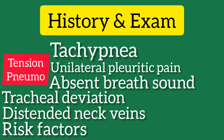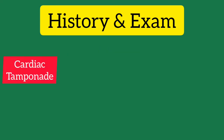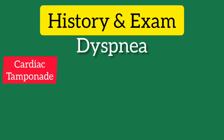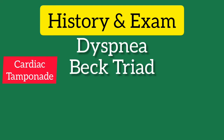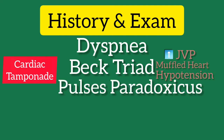Diagnostic clues to pericardial tamponade as the etiology of undifferentiated shock include dyspnea, Beck's triad (i.e., elevated jugular venous pressure, muffled heart sounds, hypotension), pulsus paradoxus, and known risk factors such as trauma, recent history of pericardial effusion, and thoracic procedures.